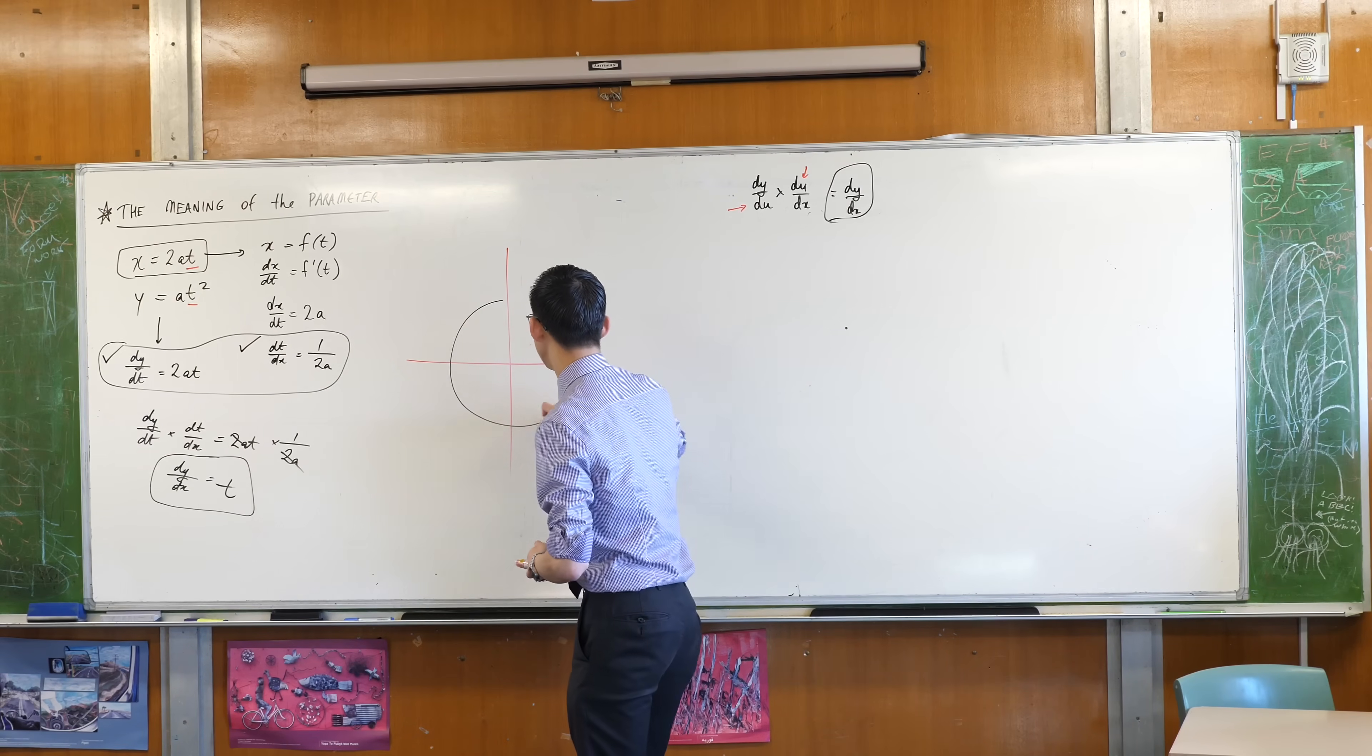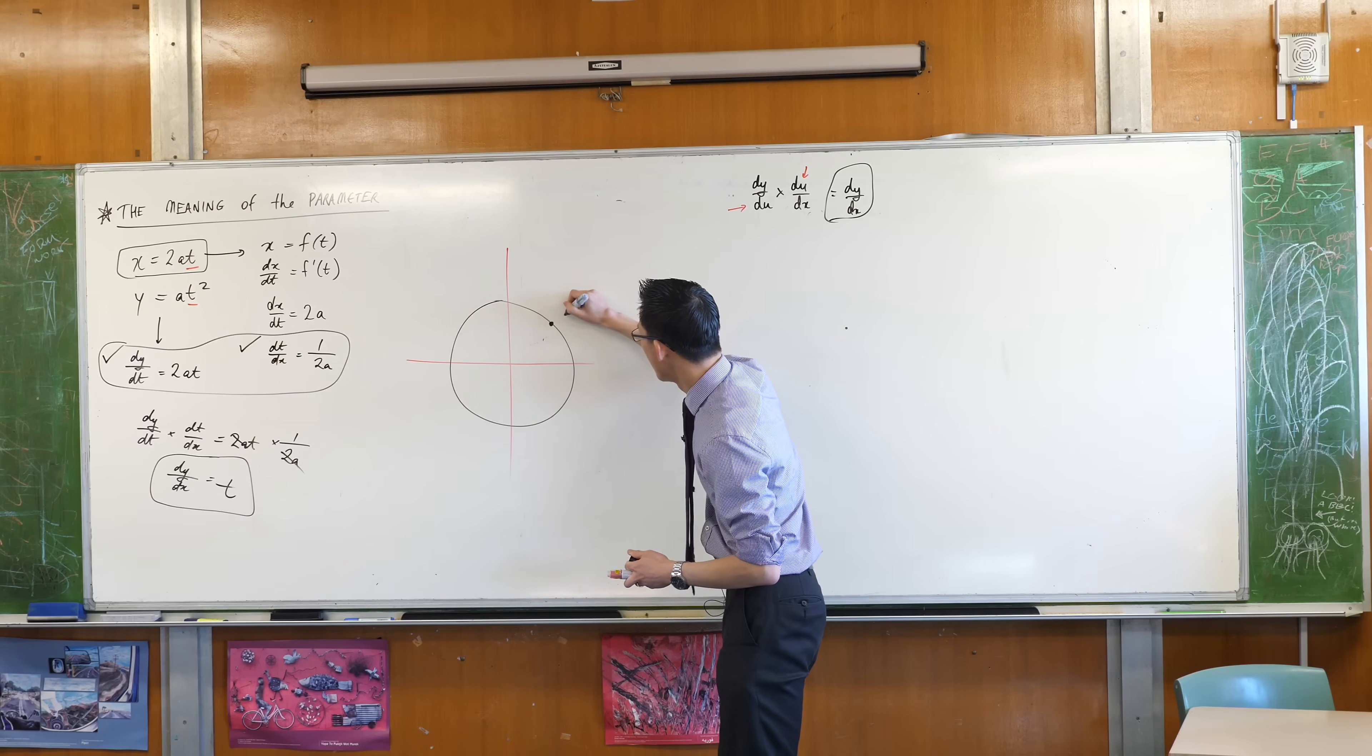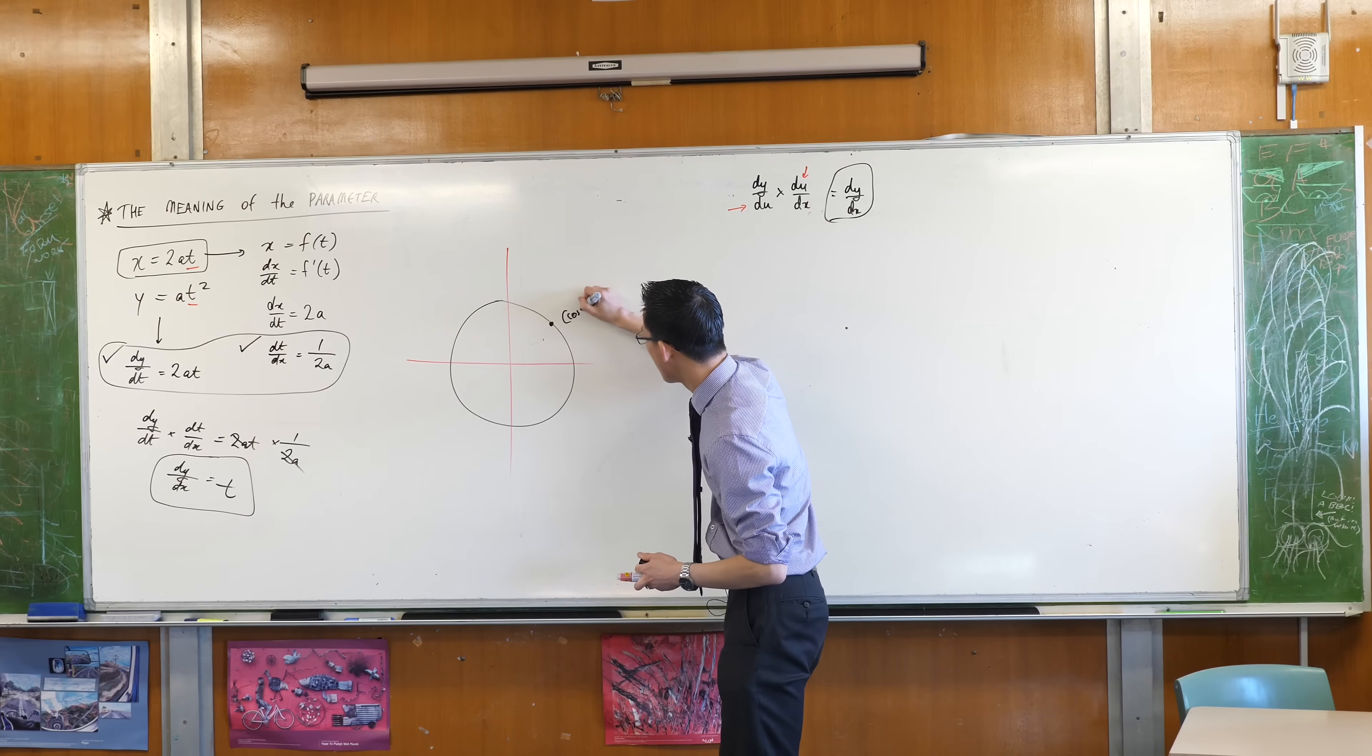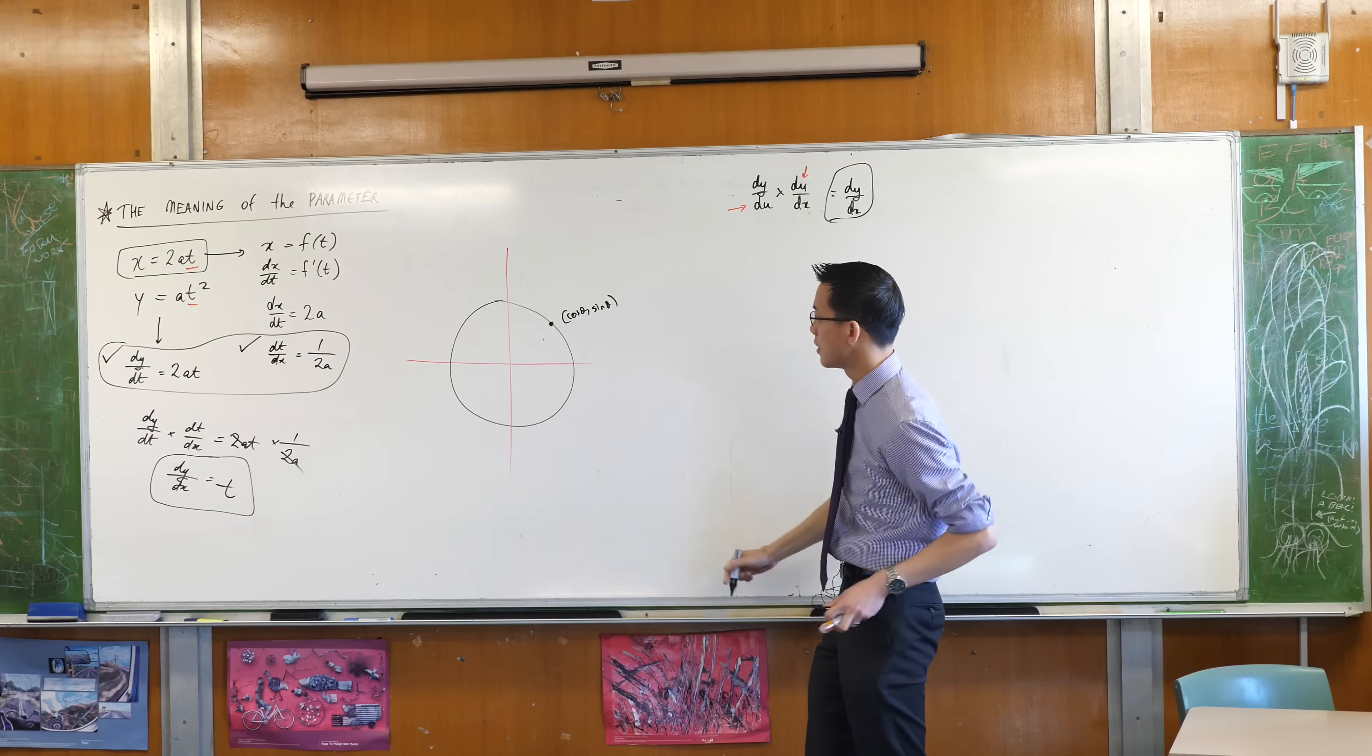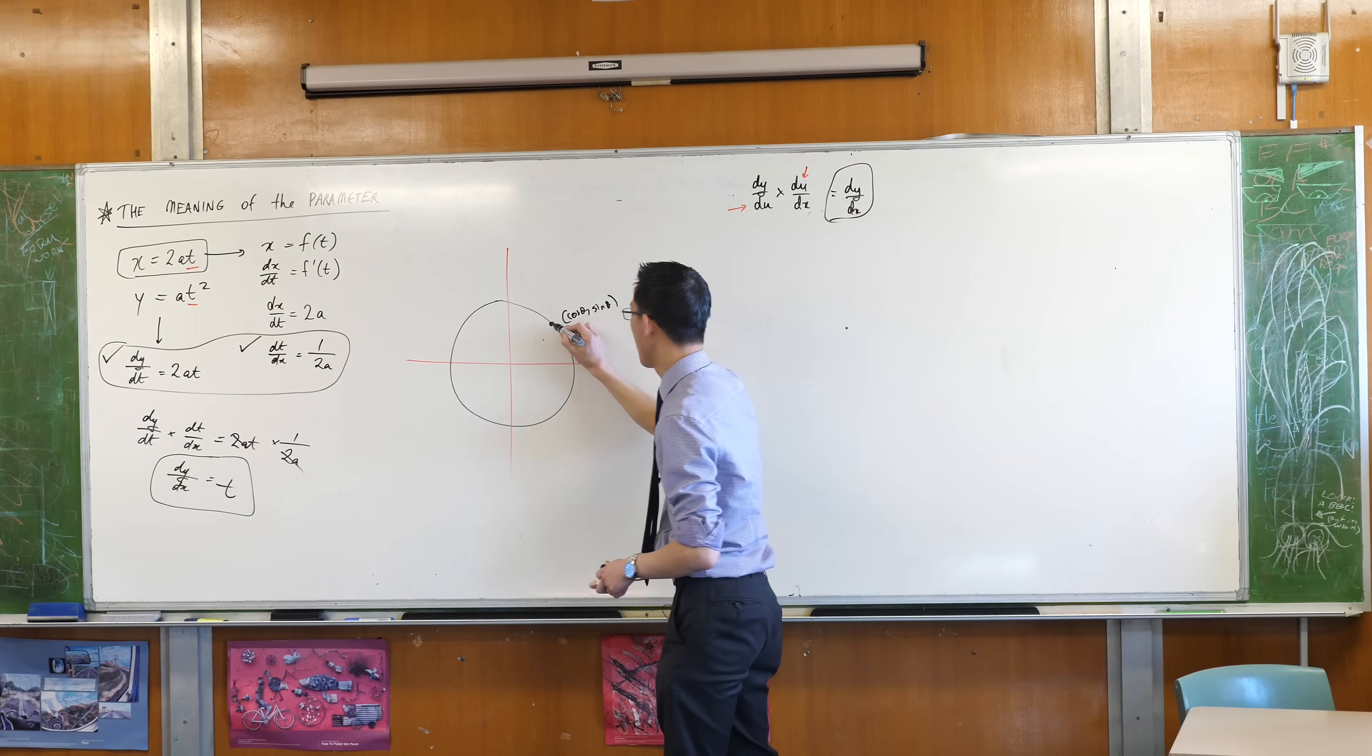When you have the unit circle, we said any point on the circumference can be stated as cos θ, sin θ.